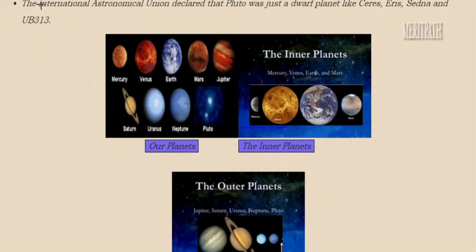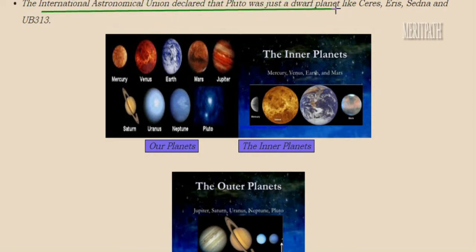Earlier Pluto was included in the 9 planets of the solar system. But later, the International Astronomical Union declared that Pluto was just a dwarf planet, like Ceres, Eris, Sedna, and UB 313. So it was removed from the main planets. There were originally 9 planets total — 4 inner and 4 outer — and later Pluto was removed, leaving 8.